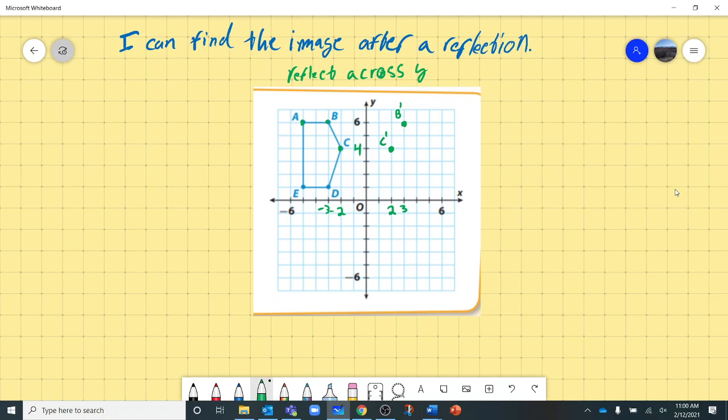My A is at negative 5, positive 6 is my Y. So I'm going to go to positive 5 for my X, positive 6 for my Y. Here's my A prime.